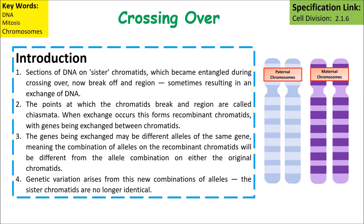Something important that's different from mitosis is that crossing over takes place. Sections of DNA or sister chromatids become entangled during crossing over and break off, sometimes resulting in an exchange of DNA. The points at which chromatids break are called chiasmata. When this exchange occurs, it forms recombinant chromatids, with genes being exchanged between chromatids.